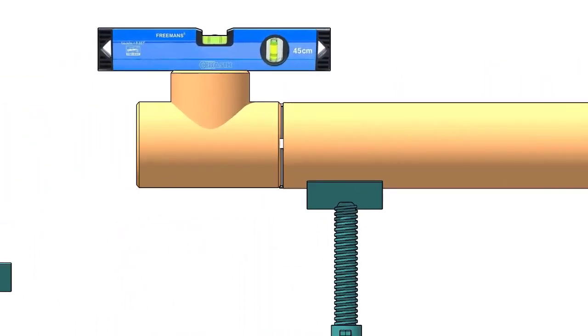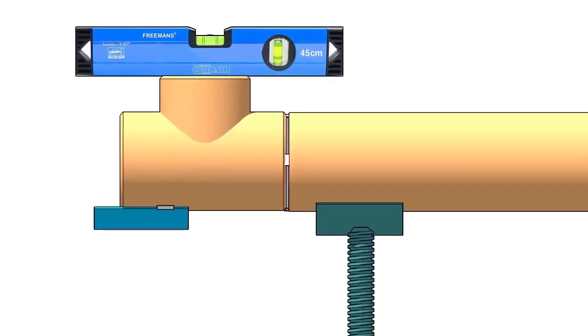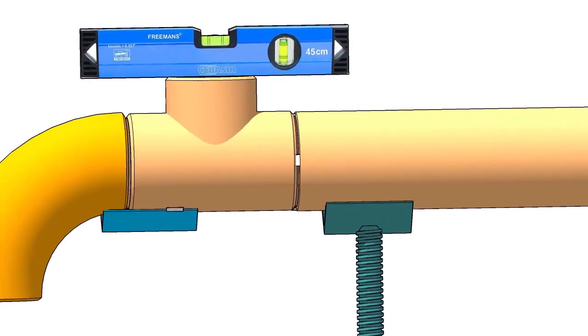Tack weld the piece of angle below the tee if you don't have a ready-made pipe clamp. The size of the angle cleat may vary according to the size of the elbow. Here I am using a 50-50 angle because the pipe diameter is 6-inch.